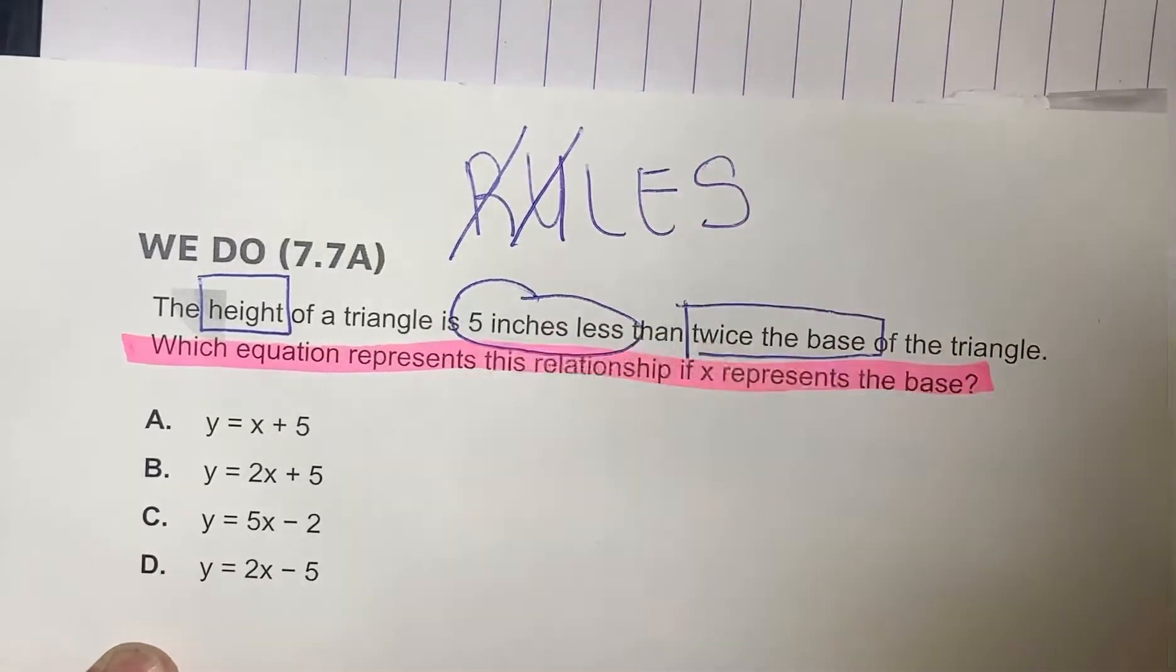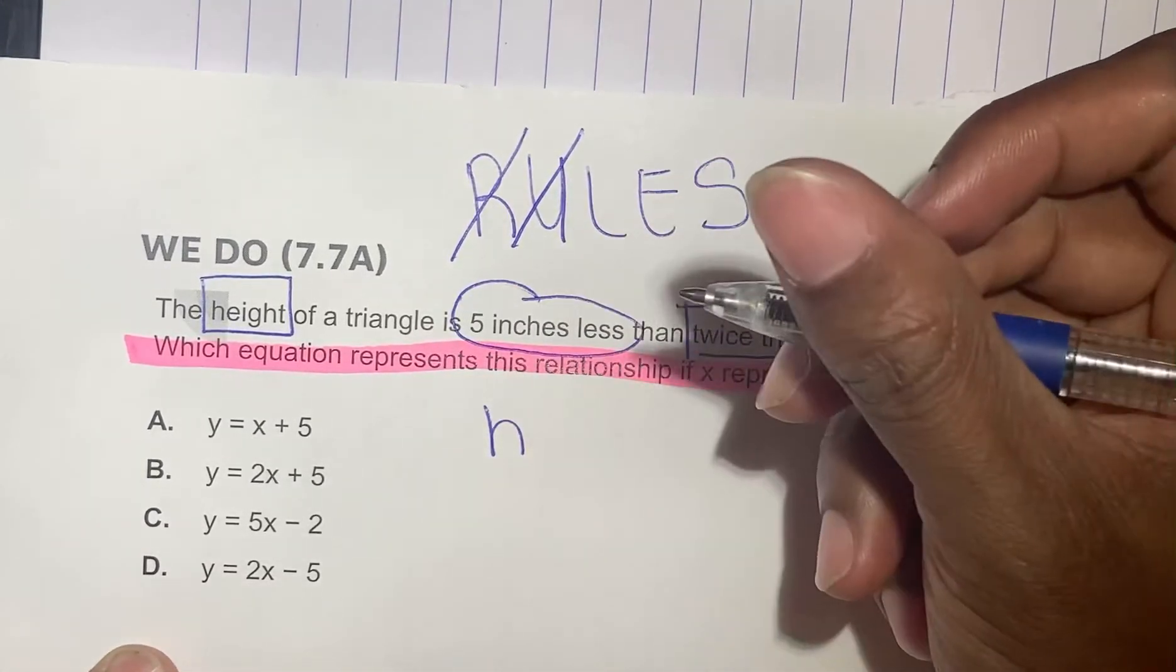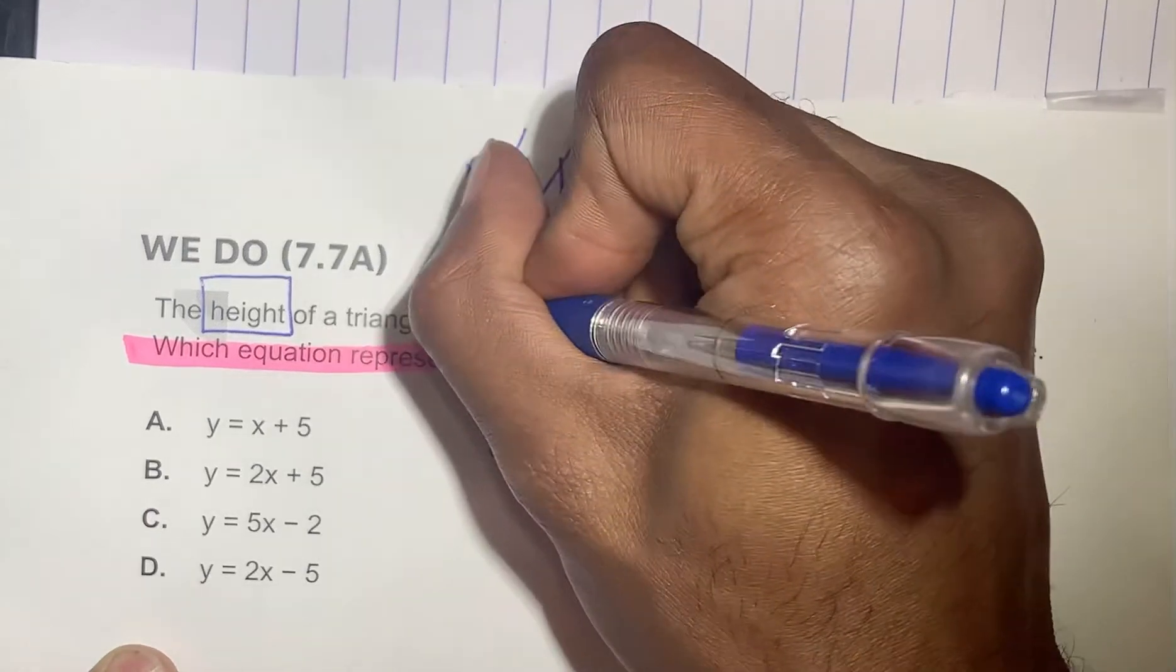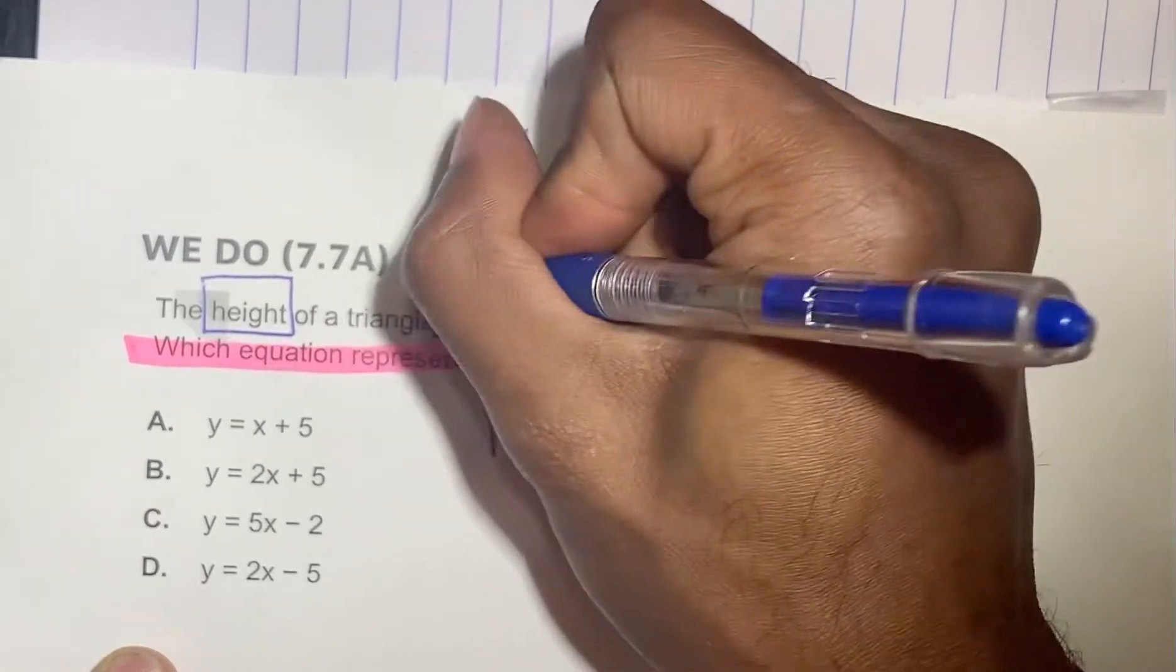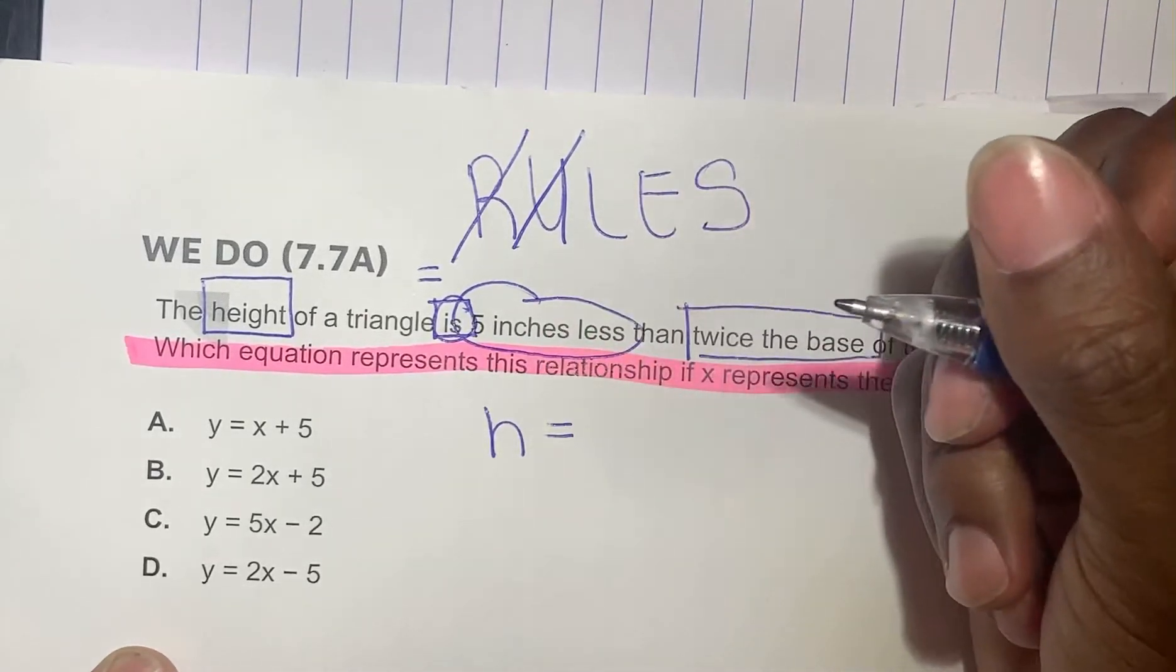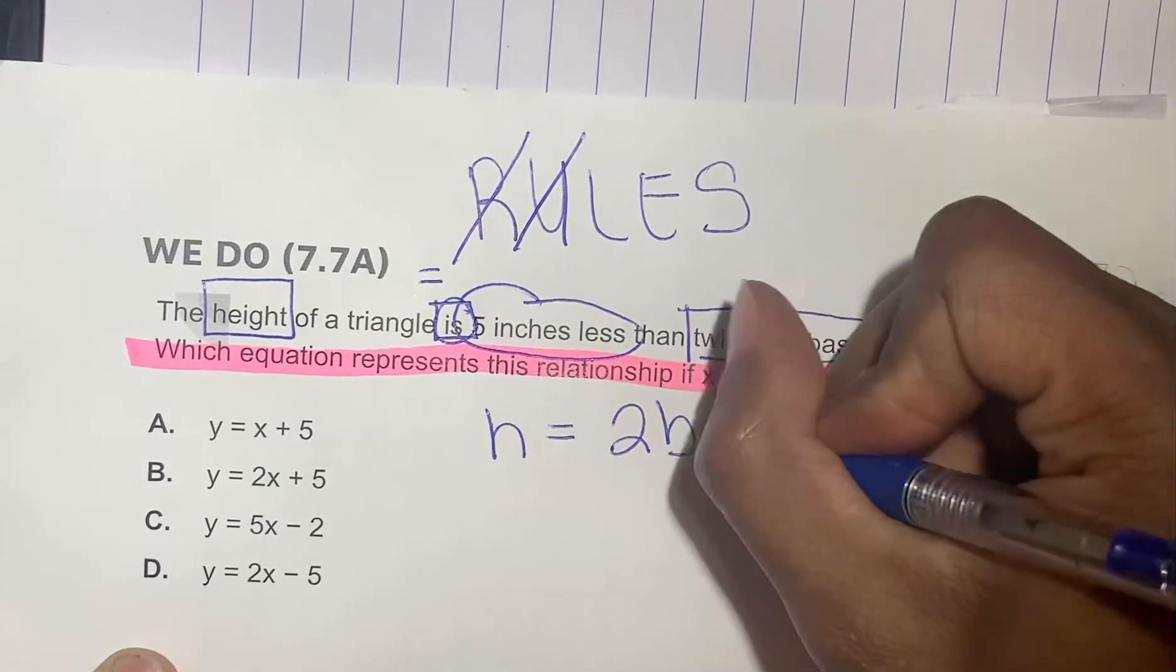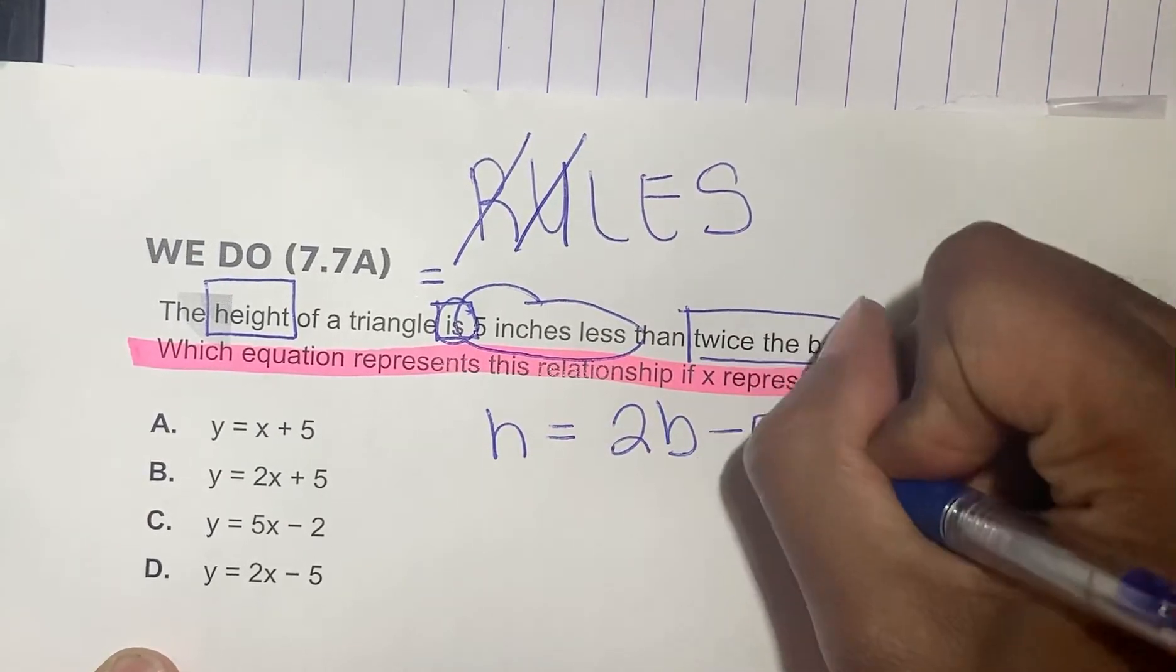Okay, so our equation would look like this. The height h is, is is a key word, meaning equals five inches less than twice the base. So two times the base minus five.